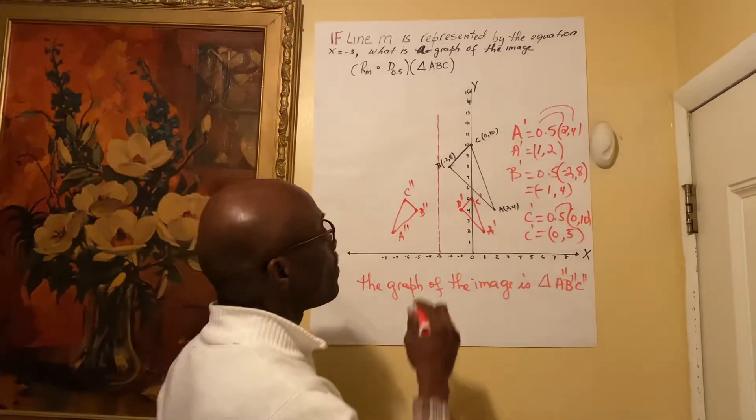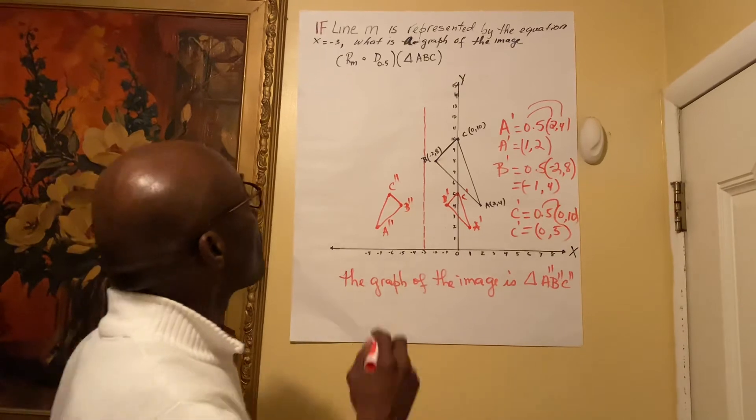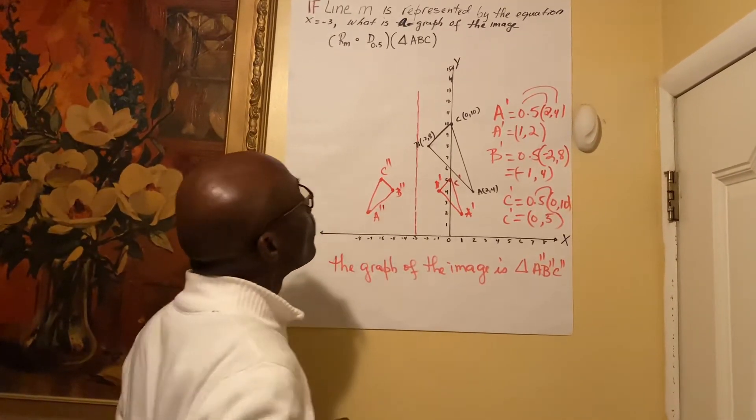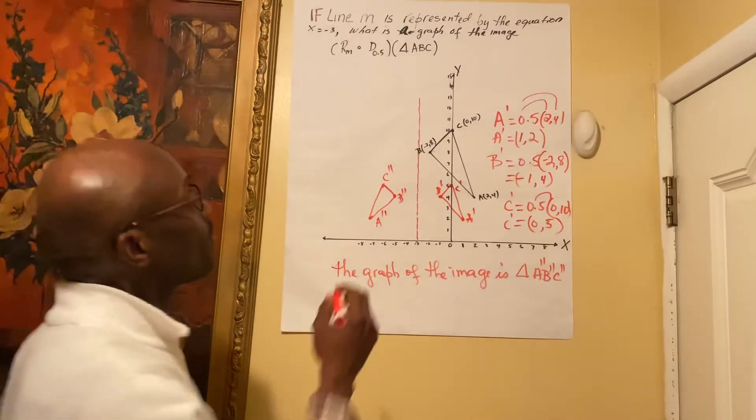We do exactly the same thing for B'. 1, 2, then 1, 2. We do exactly the same thing for C'.